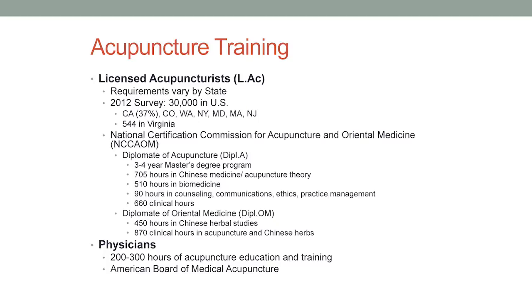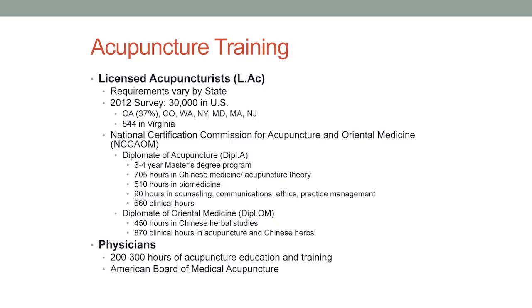The national boards for licensed acupuncture are administered by the NCCAOM. A diplomat of acupuncture must complete a three-to-four year master's degree program with about 700 hours in Chinese medicine and acupuncture theory, and 500 hours in sciences — which includes knowing when to refer out to physicians. For a diplomat of oriental medicine, my own certification, there's an additional 450 hours in Chinese herbal studies. Physicians, given their background in anatomy and medicine, need about two to three hundred hours of acupuncture training; their board certification is called the American Board of Medical Acupuncture.